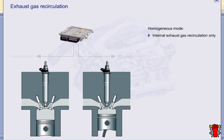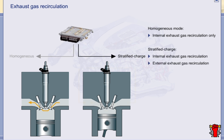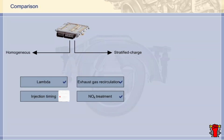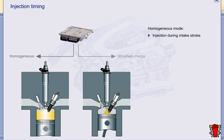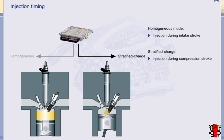In homogenous mode, internal exhaust gas recirculation by means of valve overlap is sufficient and external recirculation is deactivated. In stratified charge mode, both internal and external exhaust gas recirculation are deployed, and the recirculation rate can be as much as 30%. Regarding injection timing: in homogenous mode, injection takes place during the intake stroke as is usual in petrol engines, whereas in stratified charge mode injection takes place during the compression stroke instead.